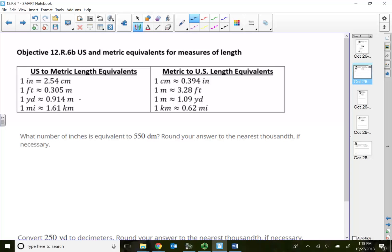This problem says: what number of inches is equivalent to 550 decimeters? So I need to take 550 decimeters and convert into inches. We look at our table and see if there's a direct conversion. As a matter of fact, I need to end up with inches, but the only thing I have is inches to centimeters. So I need to go from decimeters to inches, but I only have inches to centimeters. Is there a way to convert between centi and deci?